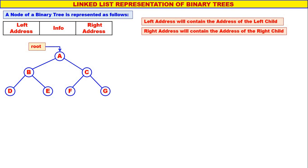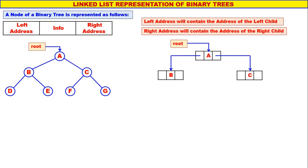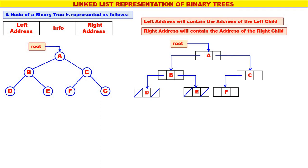This is the tree. The root contains the address of node a. Left pointer of a points to node b, right pointer of a points to node c. Left pointer of b points to d, right pointer of b points to e. Left and right pointers of d are both null. Left and right pointers of e are both null. Left child of c is f, right child of c is g. Left and right pointers of f are null. Left and right pointers of g are null. The linked list representation of binary trees is much easier — there is no formula; just store the address of the left child to the left pointer and the address of the right child to the right pointer.